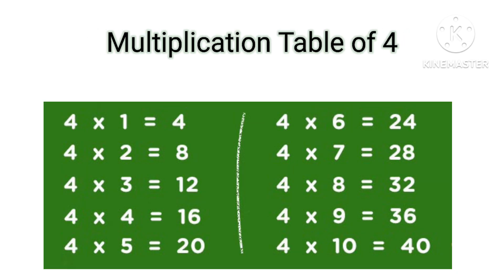Table of 4: 4×1=4, 4×2=8, 4×3=12, 4×4=16, 4×5=20, 4×6=24, 4×7=28, 4×8=32, 4×9=36, 4×10=40.